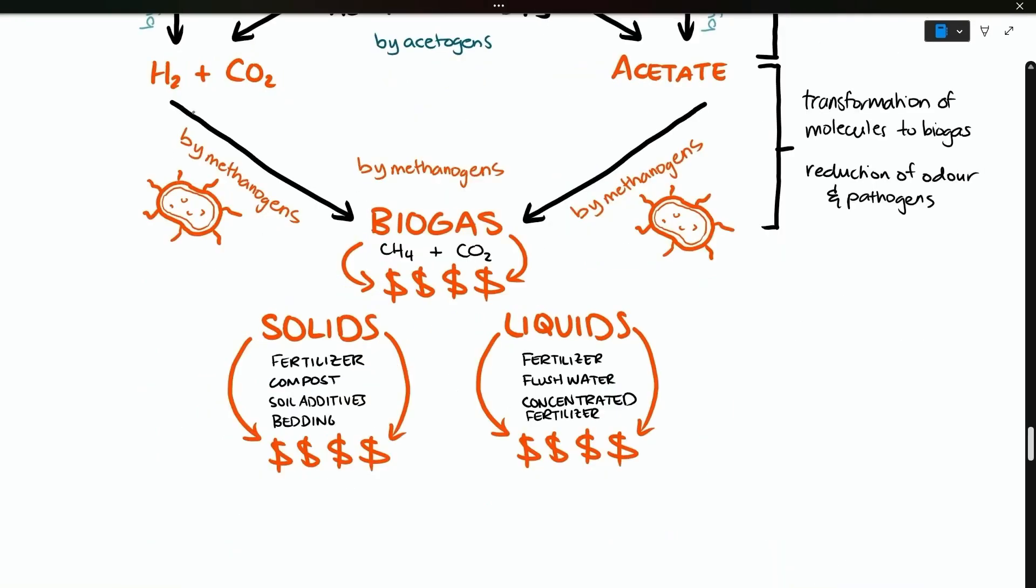Lastly, the methanogens eat the hydrogen, carbon dioxide, and acetate, and turn it into biogas through methanogenesis. The key here is that the process has several steps and these steps have to be in balance so that your digester can be in balance and have stable biogas production.